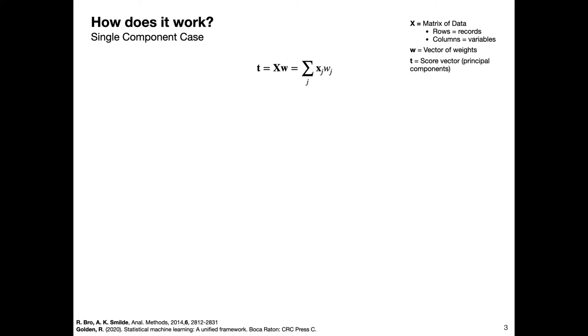So t is what we're interested in. We have our data X and we're trying to find a w that is going to create this principal component for us. Here's the magic of PCA: the goal is to maximize the variance of t subject to the constraint that the norm squared of w—so w transpose times w—is equal to one.